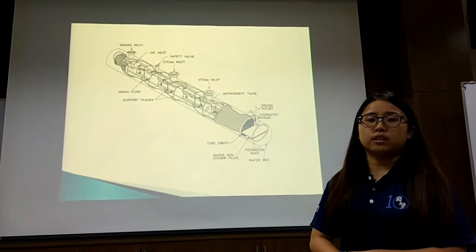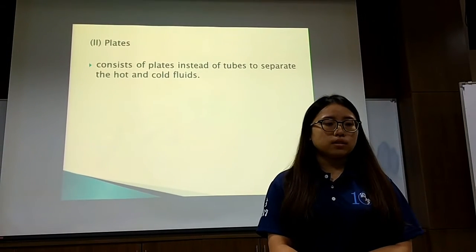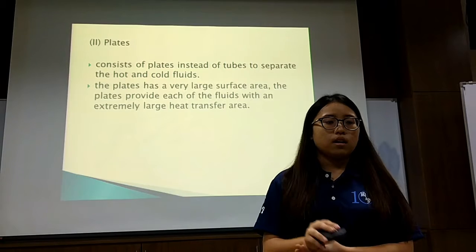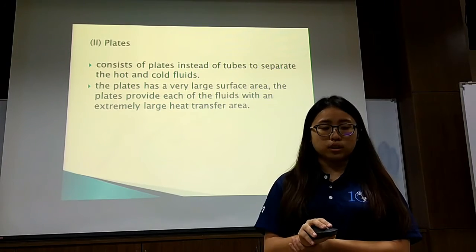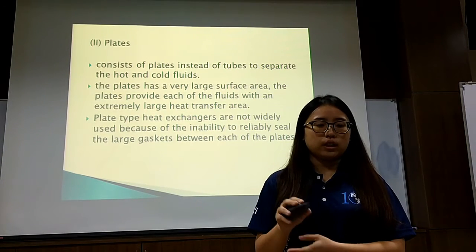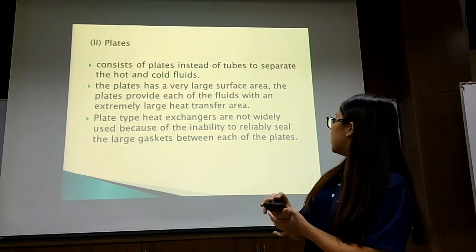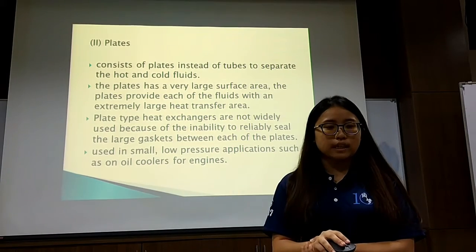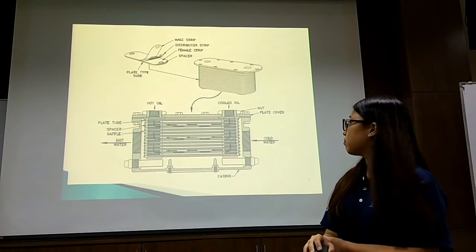This is the diagram of the tube and shell heat exchanger construction. The next type is the plate heat exchanger. The construction consists of plates instead of tubes to separate the hot and cold fluids. The plates have a very large surface area, providing each fluid with an extremely large heat transfer area. However, plate type heat exchangers are not widely used due to the inability to reliably seal the large gaskets between each plate. They are used in small low-pressure applications such as oil coolers and engines.